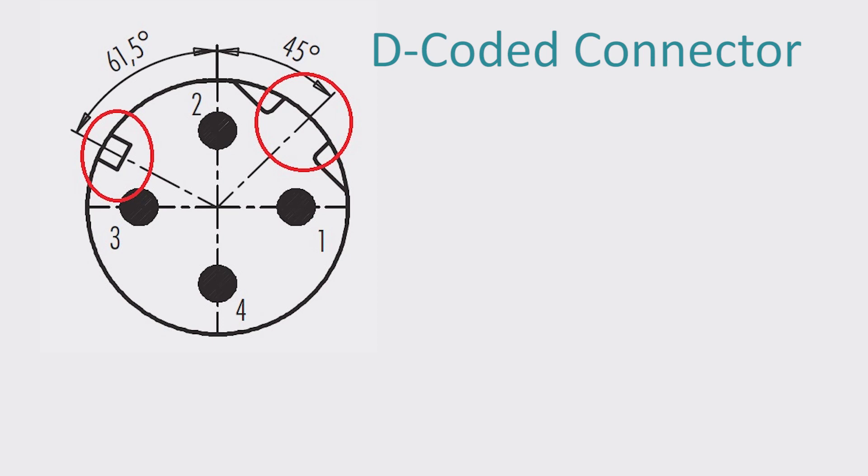The D-coded connector has its own configuration with the distinguishable traits circled in red. This connector type can function on ethernet IP, profinet, and ethercat for up to 100 megabytes. The number of pins can vary depending on the network, and it usually falls between 3 to 5 pin connections.